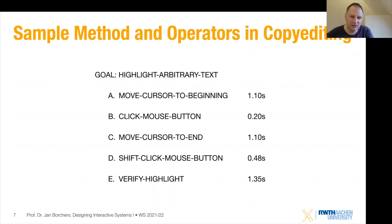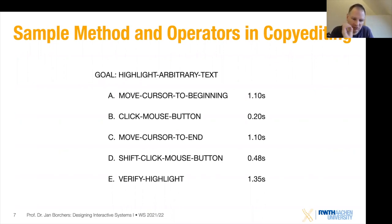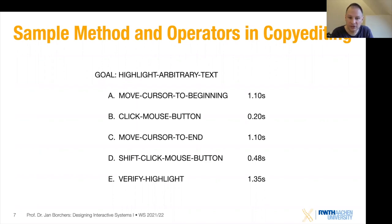These timings are derived from basic experiments done with lots of people. On average, when people try to hit a character on a screen to set the cursor position — for example to the beginning of the highlighting area — it will take them 1.1 seconds. You already know a technique to determine this number more precisely, which is Fitts' Law. If we know how far it is from the current mouse position to the target position, we can do a better job of estimating the time.